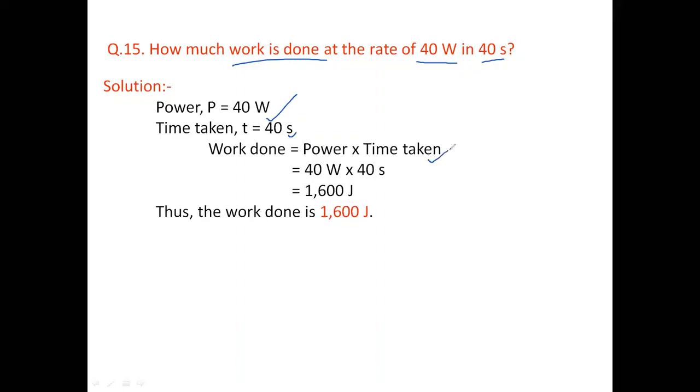Simply we will calculate the work done by multiplying power by time taken. So work done is equal to power into time taken, that is 40 watt into 40 seconds. It will be 1600 joule. So the work done is 1600 joule.